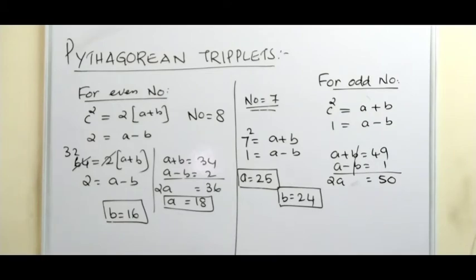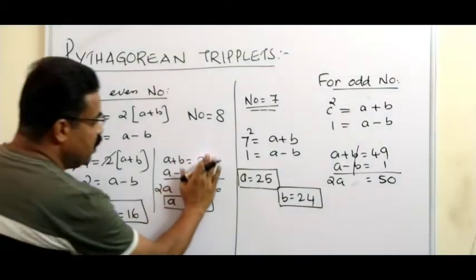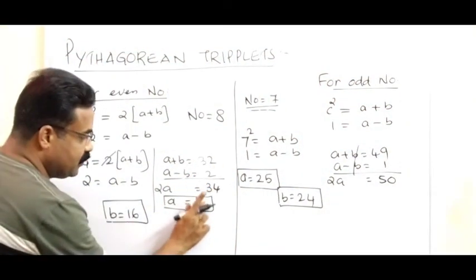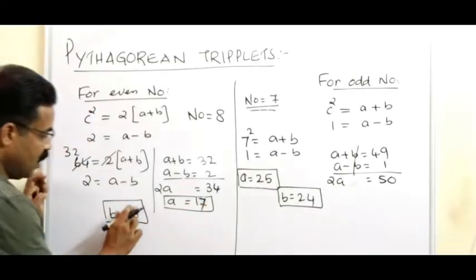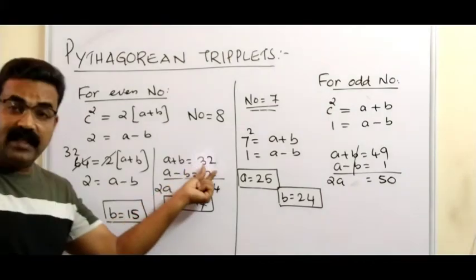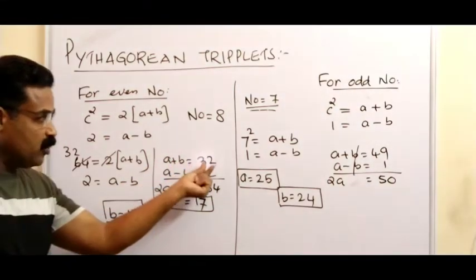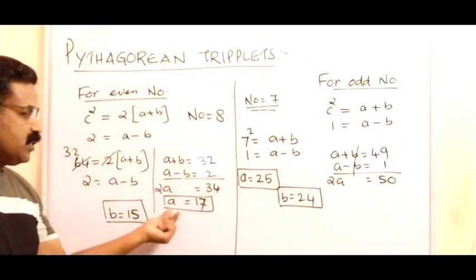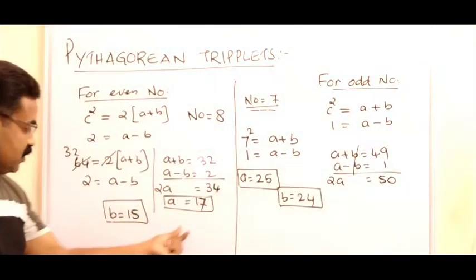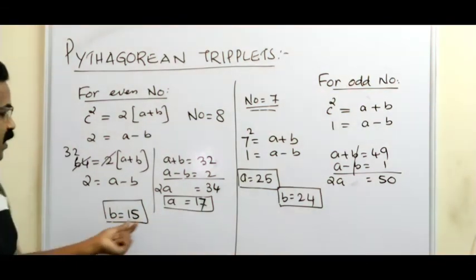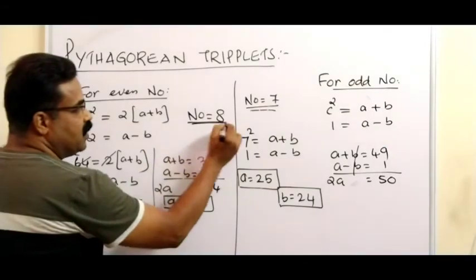Correcting: a + b = 32 and a − b = 2, so 2a = 34, giving a = 17. Substituting back, 17 − b = 2, so b = 15. Therefore a = 17 and b = 15.